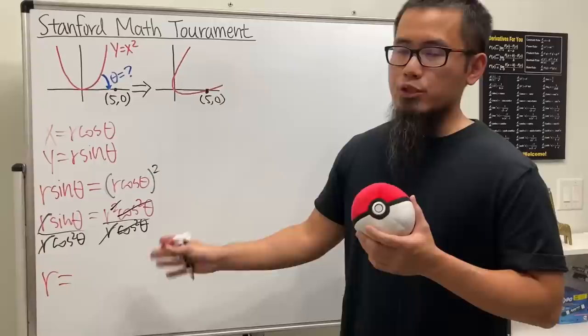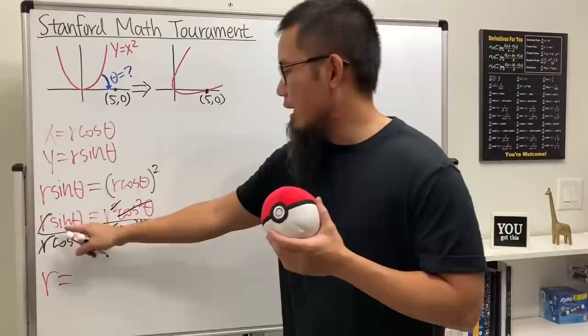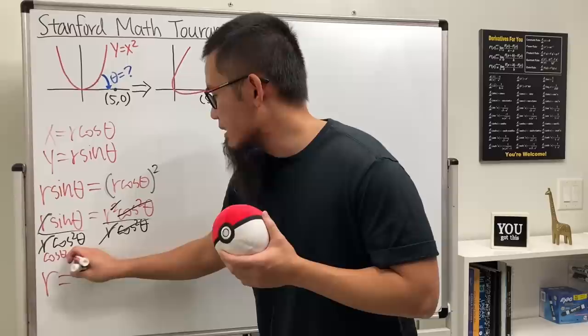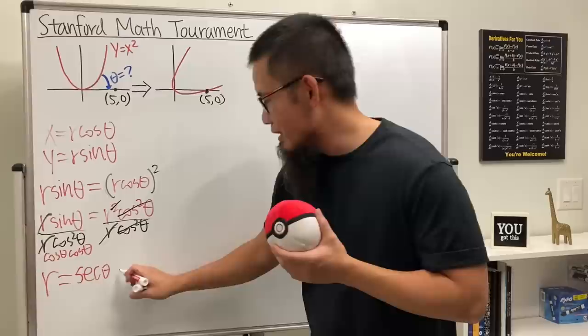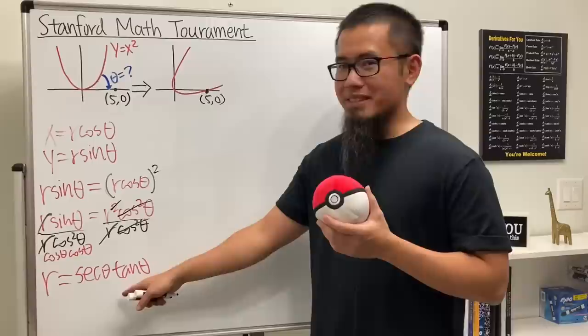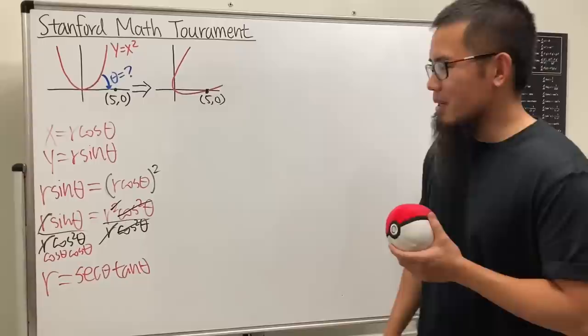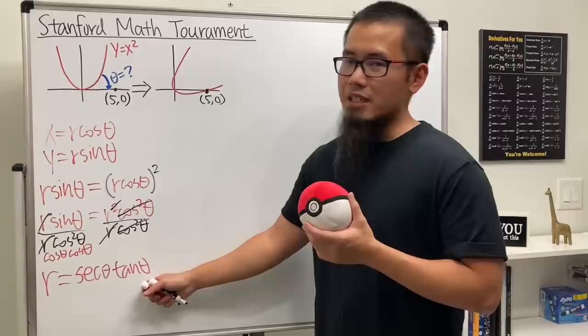I would like to divide both sides by r and I would like to divide by cosine squared as well because I want to isolate the r. So we just have r by itself. And you know what, this is actually really cool. The parabola y equals x squared in its polar form is: have a look, we have secant theta times tangent theta. Yes, this is just the derivative of secant theta.